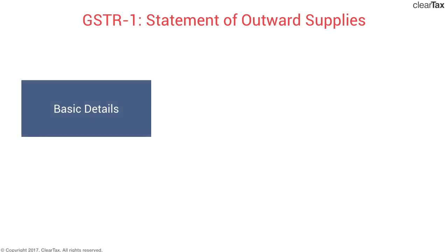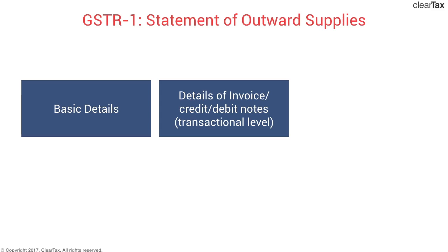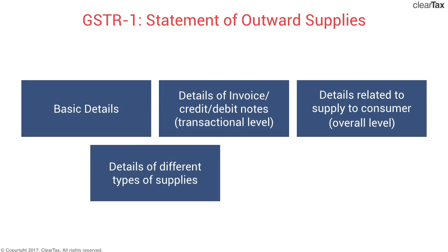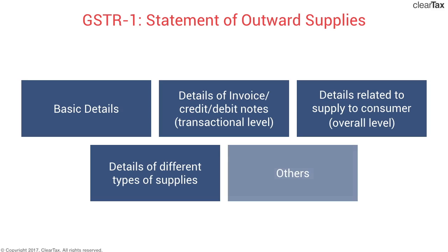The five broad categories are: first, basic details; second, details of invoices, credit notes, or debit notes — these are transaction-level details; third, details related to actual supply to consumers, which is at an overall level rather than transaction level; fourth, details of different types of supplies made; and fifth, a general category of other information required.